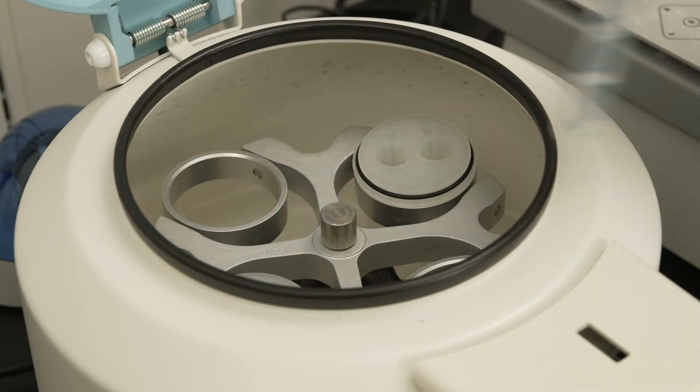Next, centrifuge the tubes at 800 g's for 30 seconds to ensure all histo-opaque is below the polyethylene barrier.